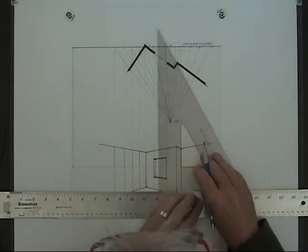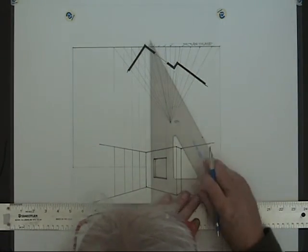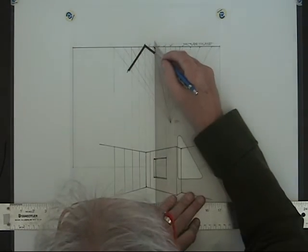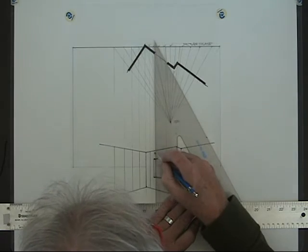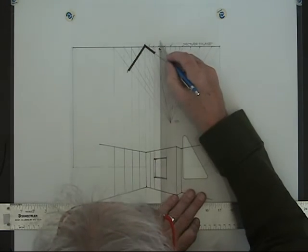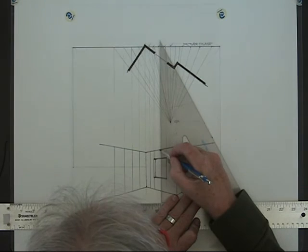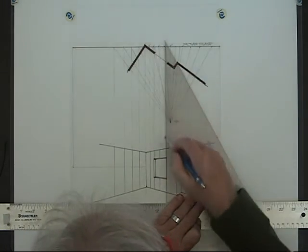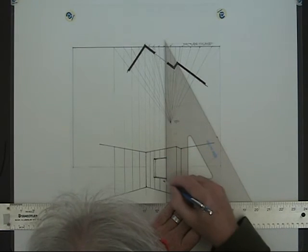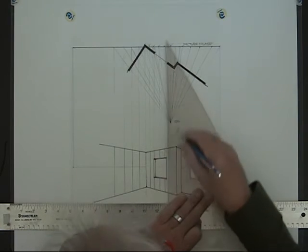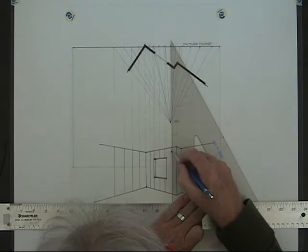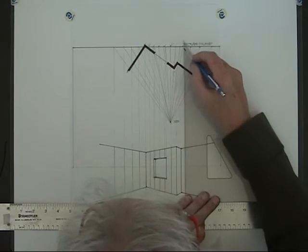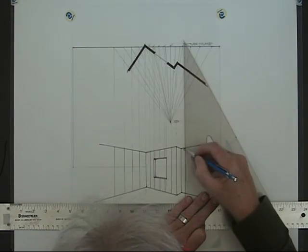And now I can drop these lines down to the front view. Grid line one. And you'll notice with linear perspective, as these lines that I'm drawing get further away from the corner of the room, they appear to get a little further apart. As things converge toward a vanishing point, they appear to get closer together.